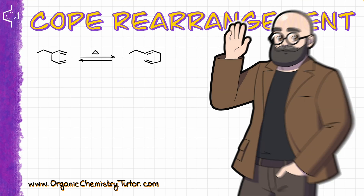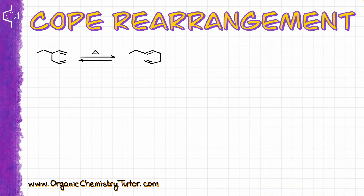Hey everyone, Victor is here. In this video I want to talk about the COPE rearrangement, which is a thermal isomerization of 1,5-dienes. This means that nearly any molecule with this basic template, with this basic structure, could potentially undergo the COPE rearrangement, as long as it can curl itself into the ring structure.